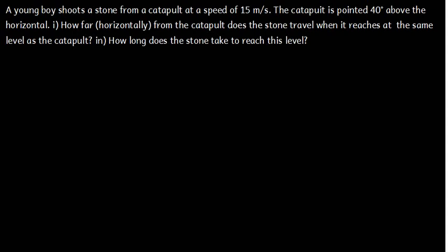In this video, we are going to solve a very interesting question under projectile motion. The question says: a young boy shoots a stone from a catapult at a speed of 15 meters per second. The catapult is pointed 40 degrees above the horizontal. Part 1: how far horizontally from the catapult does the stone travel when it lands at the same level as the catapult? Part 2: how long does the stone take to reach this level?